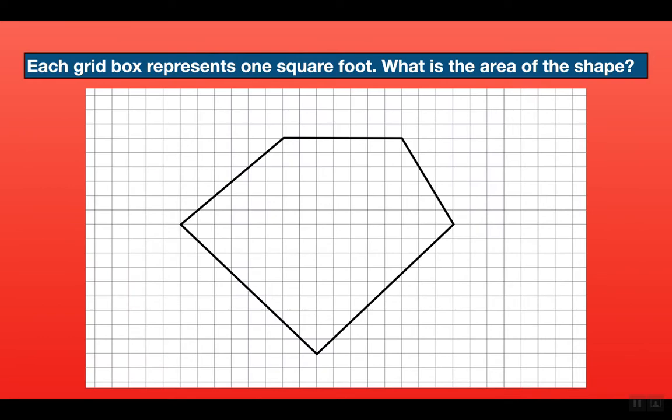Each grid box represents one square foot. What is the area of the shape? Area is measuring the space inside the shape, whereas perimeter measures the distance around the outside. The easiest way I recommend is to divide this shape into simpler shapes like triangles and rectangles.